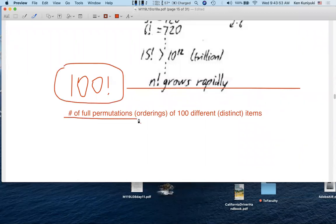What is 100 factorial? The number of full permutations or orderings of 100 different or distinct items. Your calculator blows up, doesn't it? This is way too big.